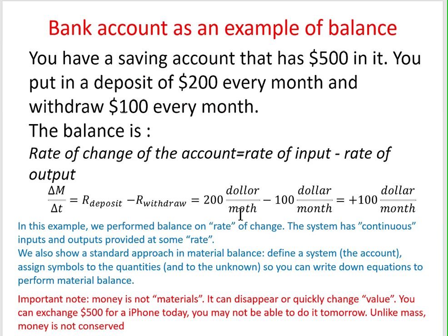We can estimate the rate of change. The material balance is still the same, but one is based on quantity and the other one is based on rate. 每个月增加100块，这是一个rate，因为里面有时间的单位。The difference is that the rate has a unit of time.